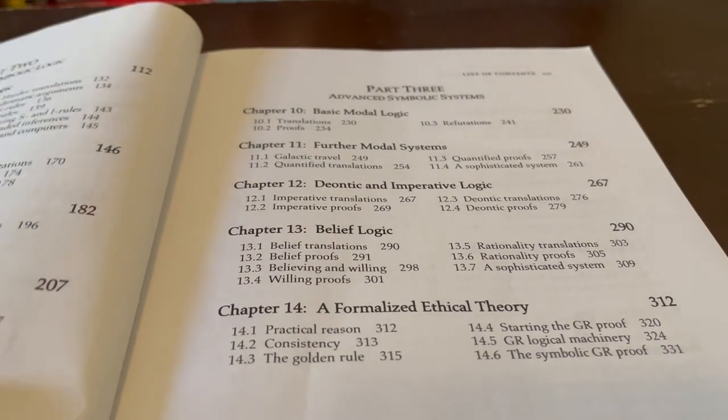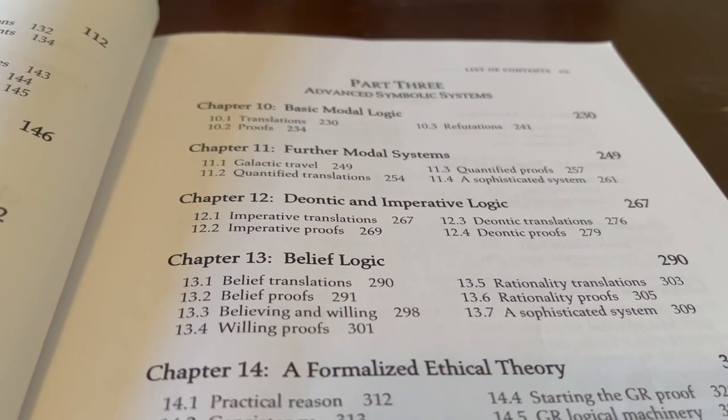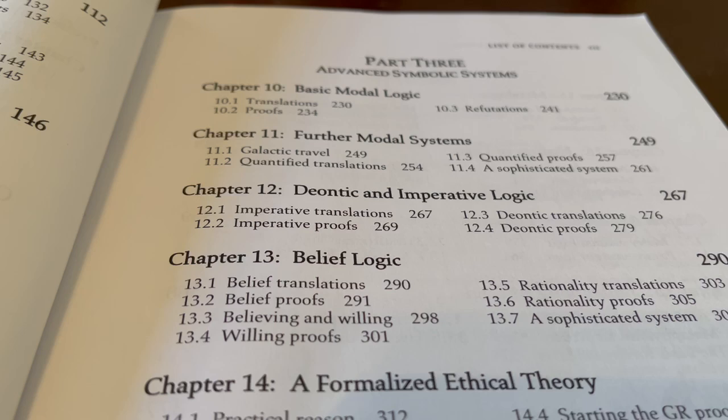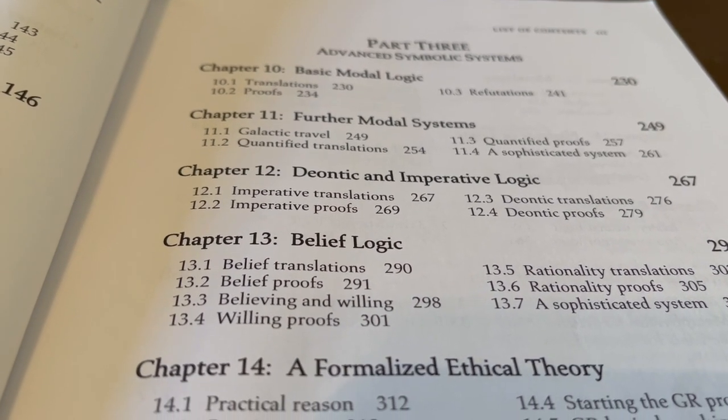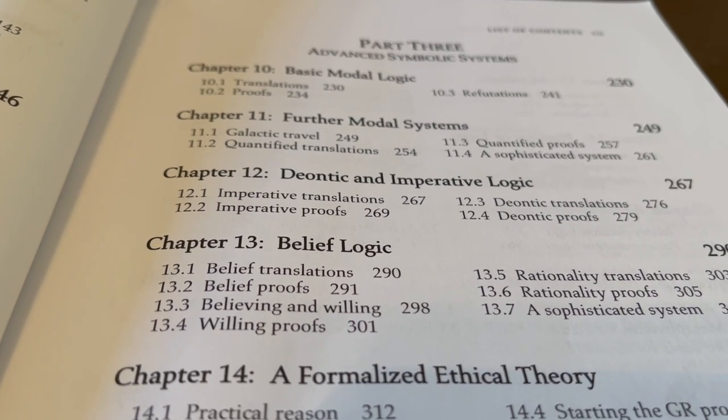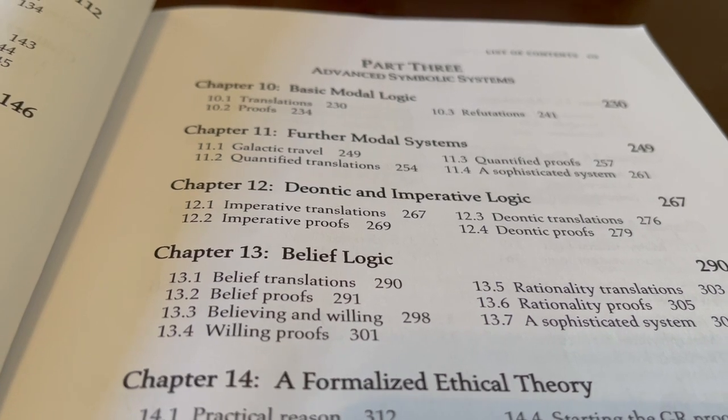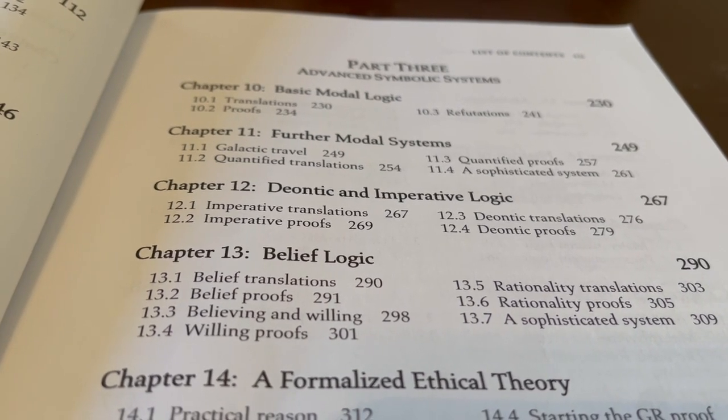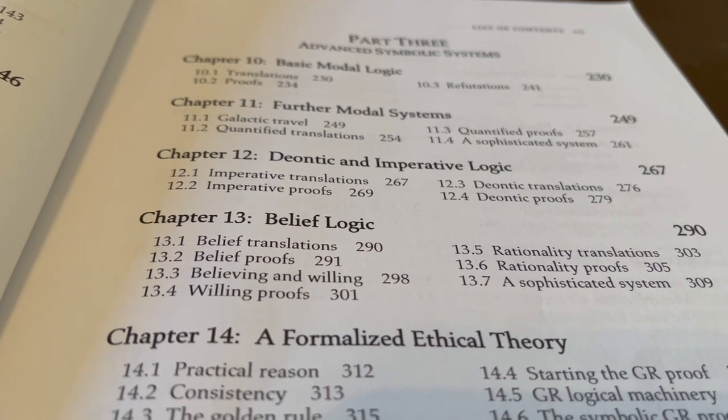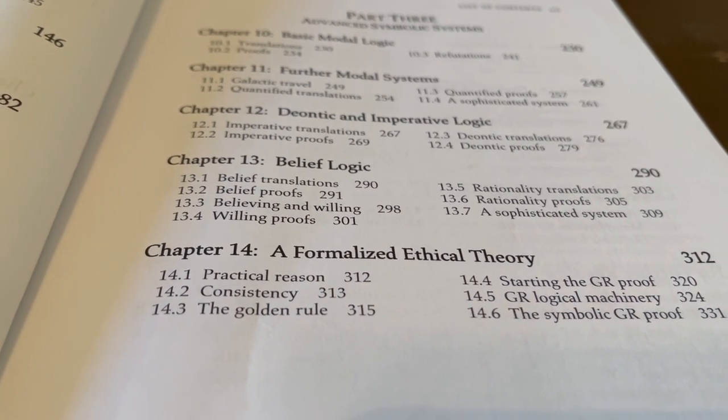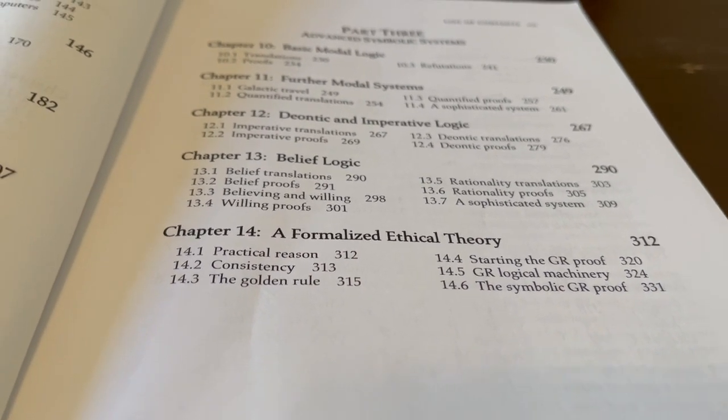But it contains more than just predicate logic and propositional logic or categorical logic. It has modal logic, for instance. So part three is on advanced symbolic systems. So chapter 10, basic modal logic and modal logic deals with necessity and possibility. Chapter 11 is on further modal systems. And then chapter 12 is on deontic logic and imperative logic. This deals with ethical propositions. Chapter 13 is on belief logic. And then chapter 14 is a formalized ethical theory. It's somewhat idiosyncratic to the author's tastes here, so to speak. But it's still very interesting.